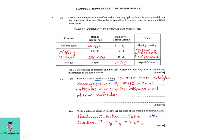Part b, question two: Write a balanced equation to show the products of the cracking of C₁₀H₂₂. You must ensure the number of carbons on the right-hand side equals those on the left, and that you get both an alkane and an alkene. For decane, we break the molecule into a 6-carbon and a 4-carbon fragment. The 6-carbon satisfies the alkane formula CₙH₂ₙ₊₂: C₆H₁₄.